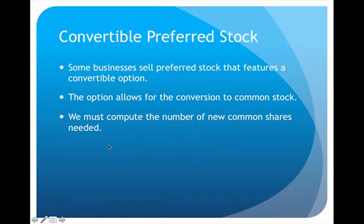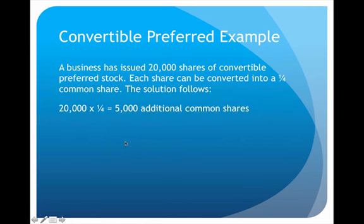The third area is convertible preferred stock — any preferred stock that features a convertible option allowing the holder to convert into common stock. In this example, a business has twenty thousand shares of convertible preferred stock, and each share can be converted into one-quarter of a common share. Twenty thousand times one-quarter equals five thousand additional common shares. All three areas — convertible bonds, stock options, and convertible preferred stock — are potential problem areas that significantly affect earnings per share.